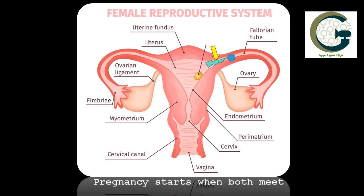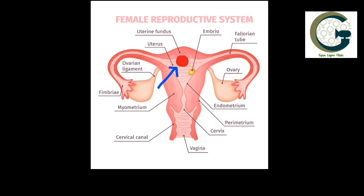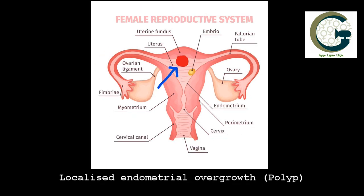Once these two have met, the pregnancy starts forming and in due course of time this pregnancy finds its way back into the uterus, as shown by the golden symbol called the embryo.